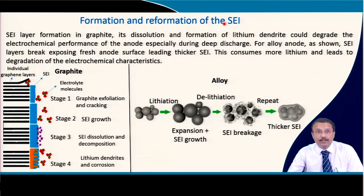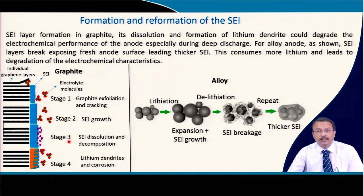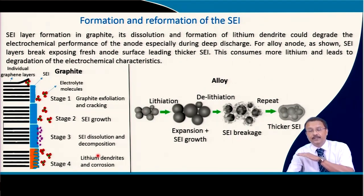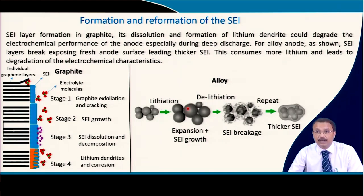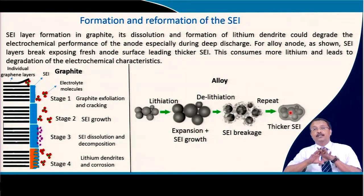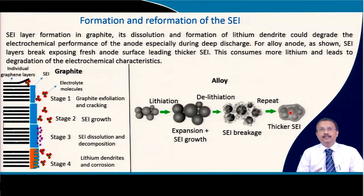Formation and reformation of the SEI — already discussed — is a recapitulation: exfoliation or cracking can take place, SEI growth can take place, SEI dissolution can take place, and if active surface is reduced then lithium dendrites can form depending on temperature as well as rate of charge, which expedites dendrite formation. All these phenomena eventually degrade the material. For alloy-based material: expansion, SEI growth, disintegration of particles, delamination of active particles from the current collector, and thicker SEI impervious to alkali ions — all degrade the cell.